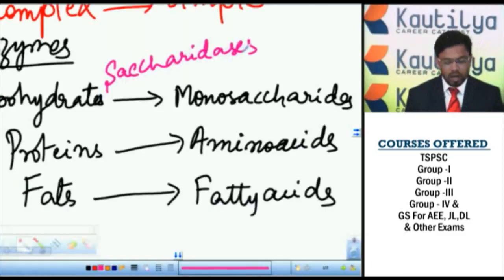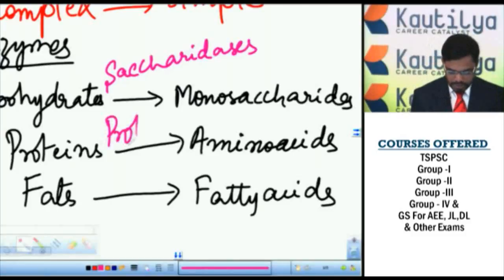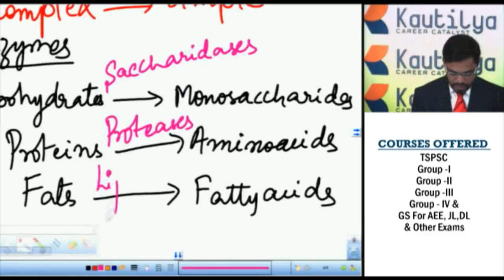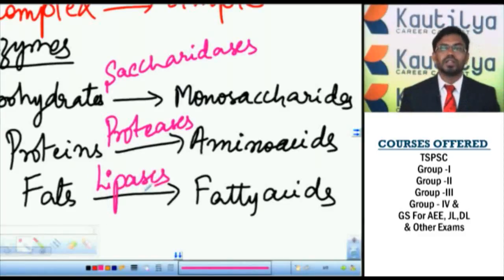They digest the carbohydrates into their simpler forms and the proteases or proteolytic enzymes digest the proteins into their simpler forms called amino acids. Whereas, the lipids digest the lipids or fats into their respective similar forms of fatty acids.